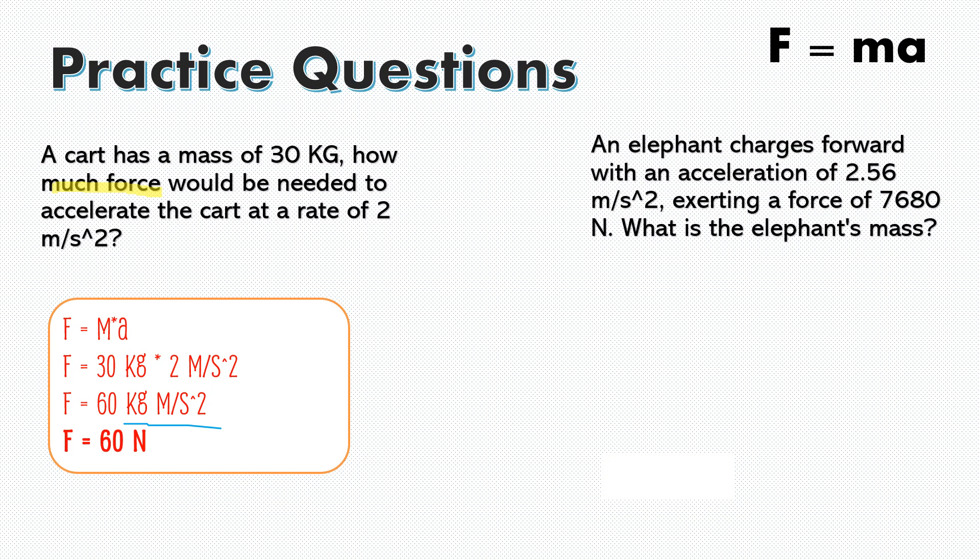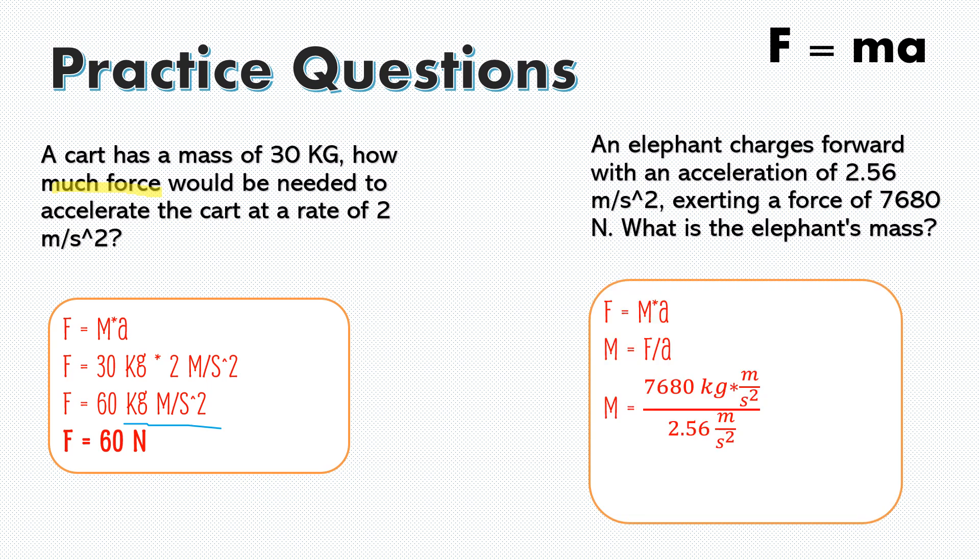Now for this question, it's going to be the exact same steps. We're looking for the elephant's mass. So since we're looking for the elephant's mass, after writing force is equal to mass times acceleration, we're going to have to restructure the formula to look for mass. So we do this by dividing both sides by acceleration. And we get mass is equal to force divided by acceleration.